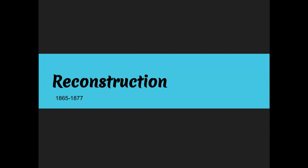This video discusses Reconstruction from 1865 following the Civil War until the election and compromise of 1877 when it ended. Reconstruction was an attempt to achieve national reunification and reconciliation after the Civil War and to improve the status of former slaves. Both goals were very difficult to satisfy, and many historians say that while the North prevailed during the Civil War, the South won Reconstruction.